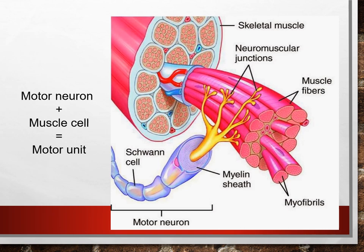The motor unit is composed of the neuron and the muscle cell. Between the nerve and the muscle fiber, there's a little gap referred to as the neuromuscular junction. Within this neuromuscular junction, chemicals called neurotransmitters get released — a good example is acetylcholine. Acetylcholine gets released into that gap, which allows for the transference of the signal, and the result is a muscle contraction.